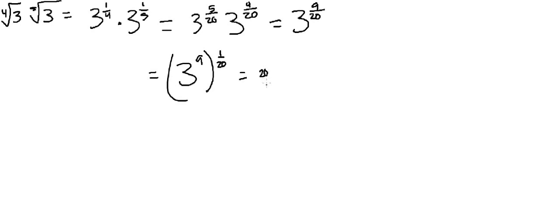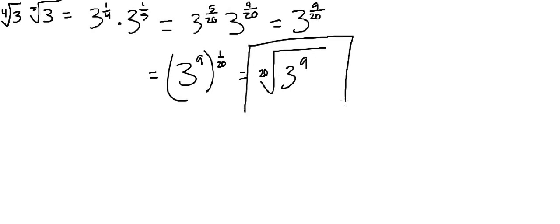So from here, what we're going to do is just rewrite this again, and we're going to put the denominator of the fraction here. And we're going to add a radical sign, and then we're going to get 3 to the 9th on the inside. And this is going to be your answer.